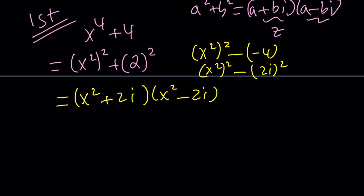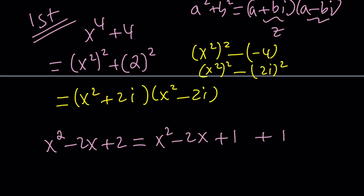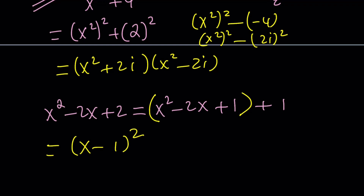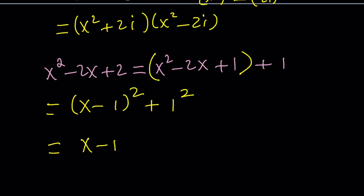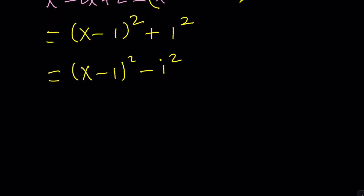What about the denominator? Is it factorable? Yes — if you consider complex numbers it is factorable. You can complete the square: write x squared minus 2x plus 2 as x squared minus 2x plus 1 plus 1, which is x minus 1 squared plus 1 squared. That's another sum of two squares. We can write this as x minus 1 squared minus i squared, which factors as x minus 1 plus i and x minus 1 minus i.